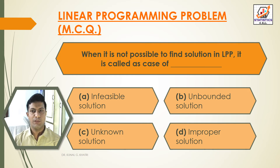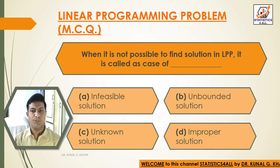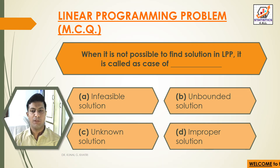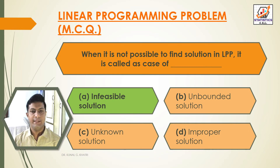Question 11: When it is not possible to find a solution in linear programming problem, it is called a case of — Option A: Infeasible solution. Option B: Unbounded solution. Option C: Unknown solution. Option D: Improper solution. Answer: Option A — When it is not possible to find a solution in linear programming problem, it is called a case of infeasible solution.